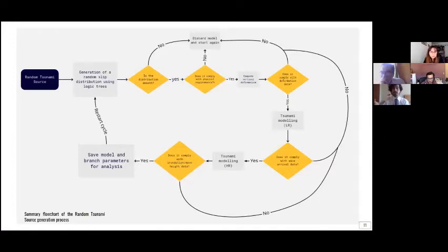And this is a flow chart of the random tsunami source generation. First, we start with the generation of random slip distribution using logic trees, using the combination of parameters that we've talked about. First, we assess if the distribution is smooth. If it's not, we discard the model. If it is smooth, we search if it complies with physical requirements such as the ones proposed by Molina 2020, such as the gravity anomalies, frictional asperities, etc. If it complies, we compute vertical deformation and then we test again.